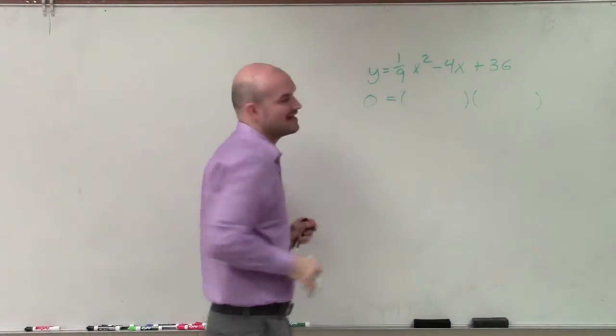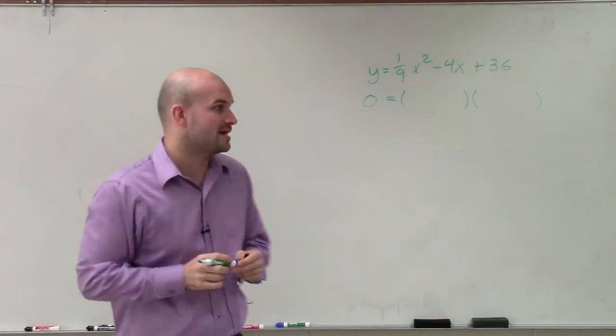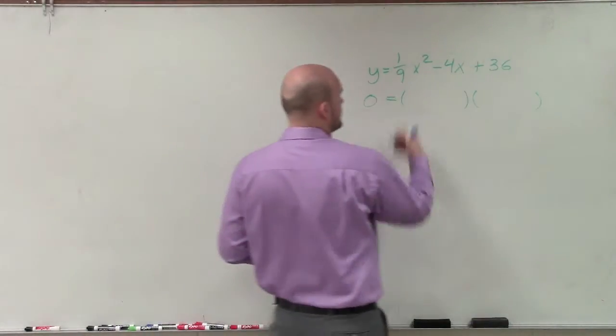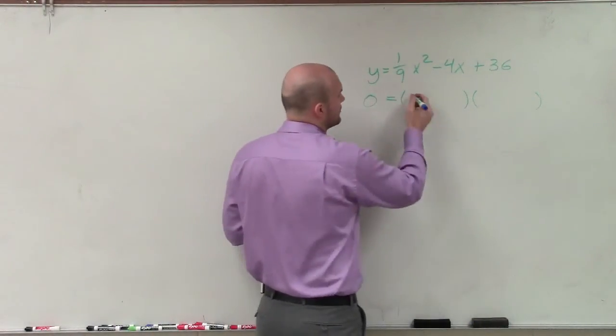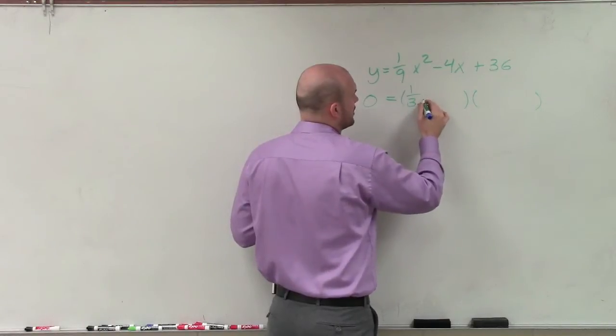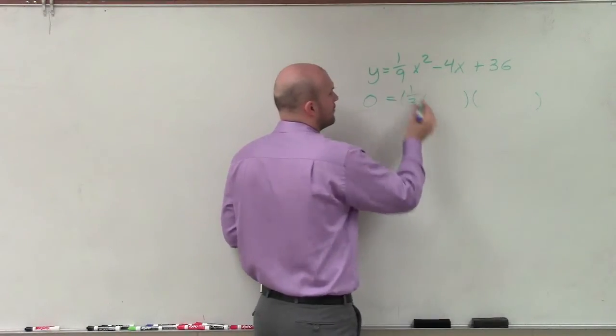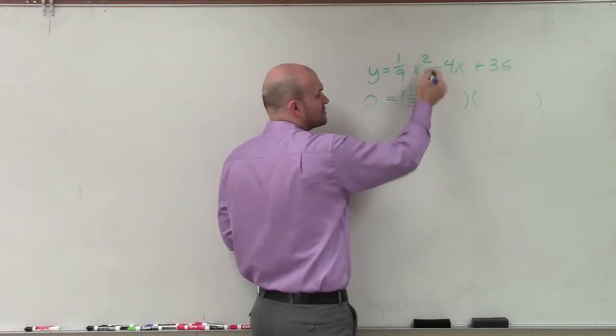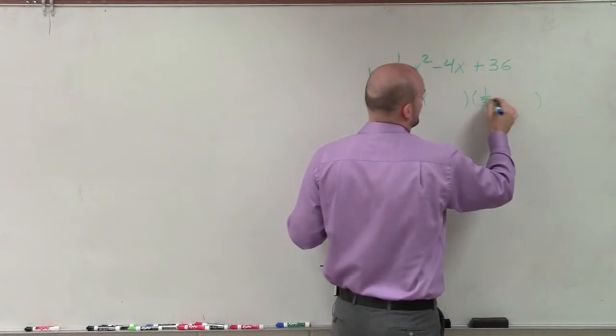since I know my first term and my last term are square numbers, what's the square root of this coefficient and what's the square root of this constant? The square root of 1/9 is going to be 1/3, and the square root of x squared is x. So that would be (1/3)x.